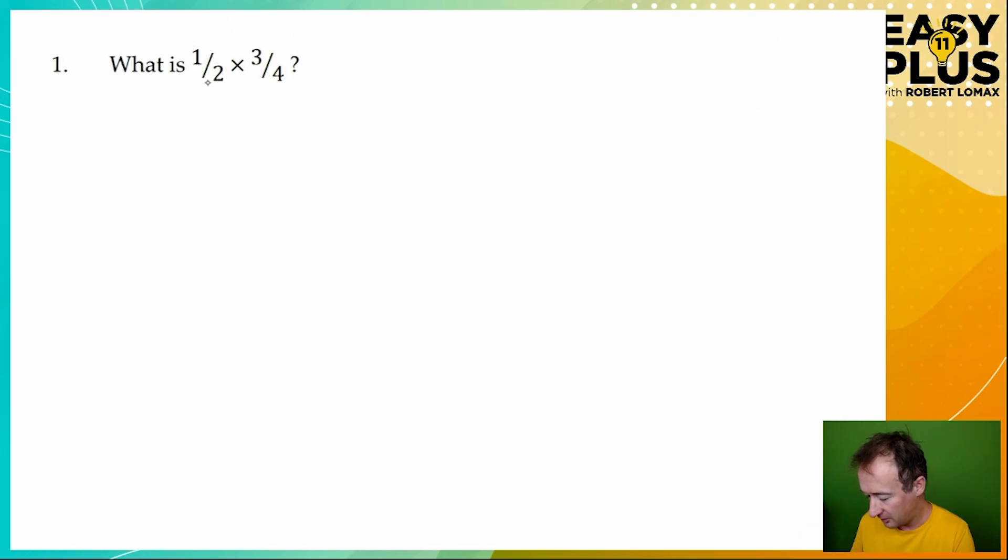So this is asking us to find a half times three quarters. Remember that times in maths is the same as the word of. You're being asked to find a half of three quarters, and if you bear that in mind, it'll enable you to check that your answer makes sense. Now when you multiply two fractions together, it's really simple: multiply the top and multiply the bottom. One times three is three, and two times four is eight. So a half times three quarters is three eighths.